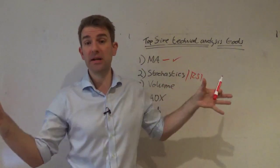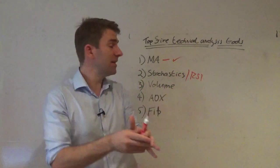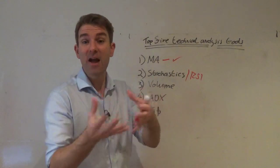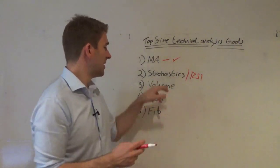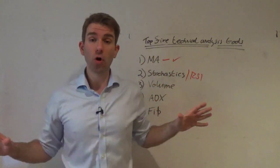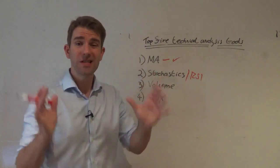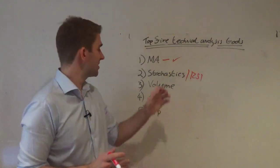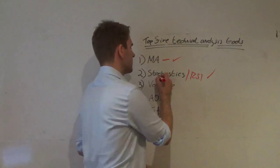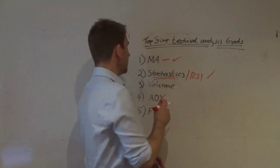Trading for me is about bringing the boundaries in and creating a set of rules. Indicators help you narrow down your target entry area so you at least roughly know where you're going to get involved. Even something as simple as not going long when stochastics are overbought, and not going short when they're oversold — if that just eliminates a small amount of losing trades, it's valuable. I personally prefer stochastics very slightly over RSI, but it's personal preference.